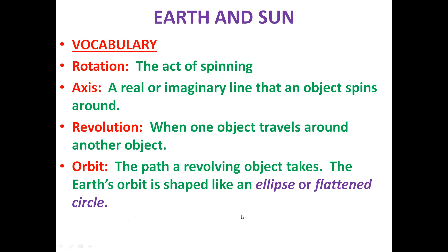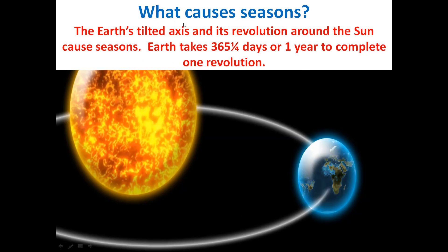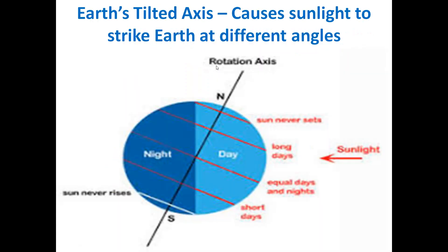What causes seasons? The earth's tilted axis and its revolution around the Sun cause seasons. The earth takes 365 and a quarter days — or one year — to complete one revolution. During this revolution, and also because of the tilted axis, seasons are caused.